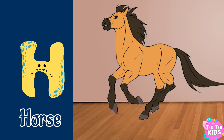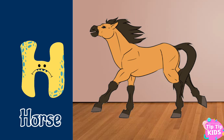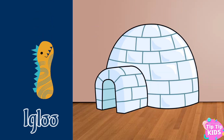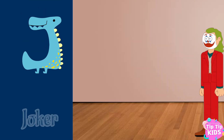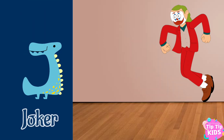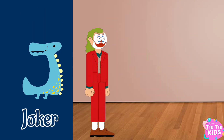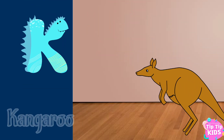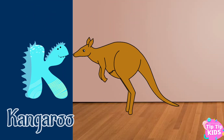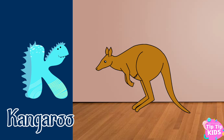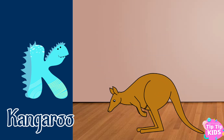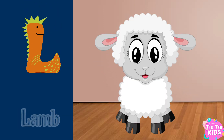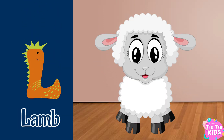I for igloo, J for joker, K for kangaroo, L for lamb.